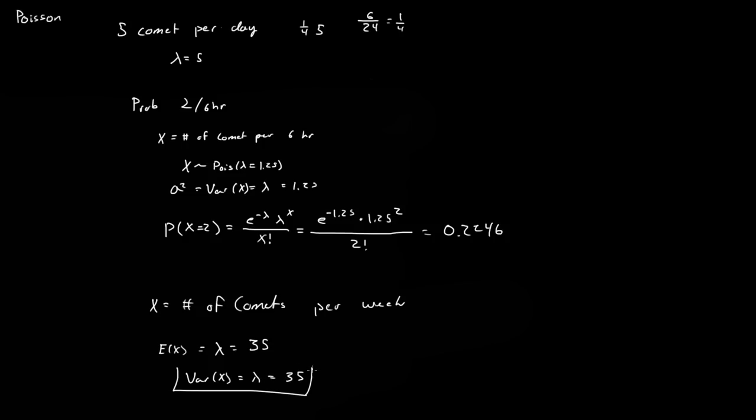So that's just the basic definition. The variance is equal to lambda, and it's also equal to the expected value of x.